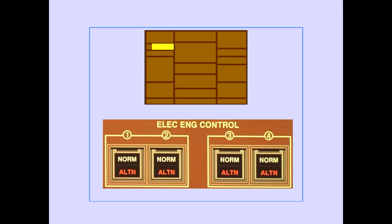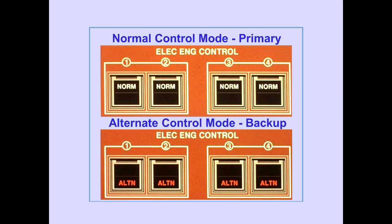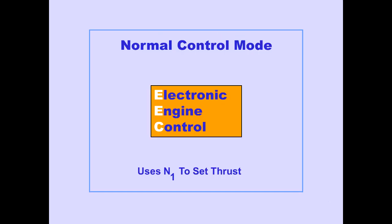The EEC controls are located on the overhead panel. The EEC has two control modes: normal and alternate. The EEC uses the normal mode as its primary control mode and uses the alternate mode as a backup. In the normal control mode, the EEC uses N1 RPM to set thrust.